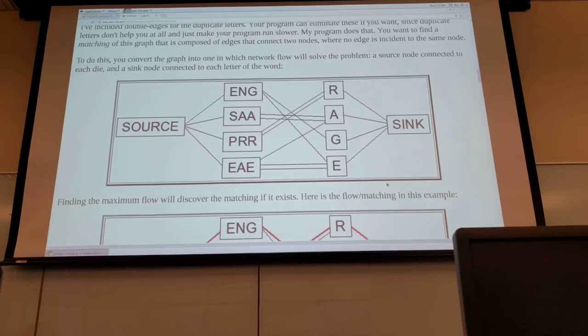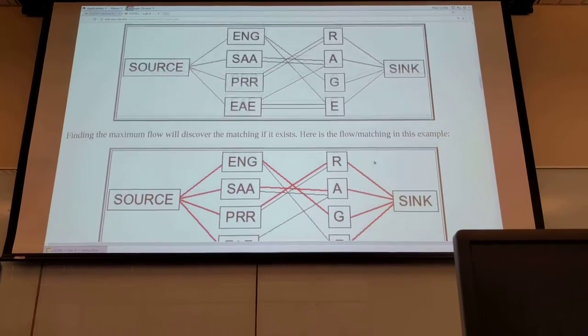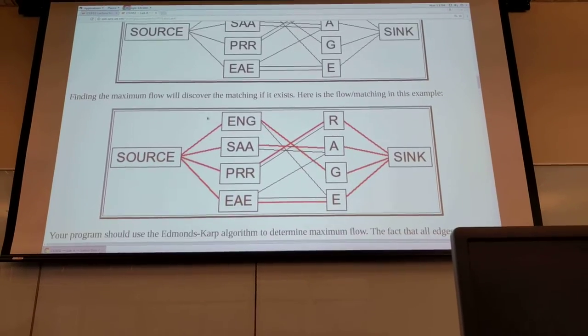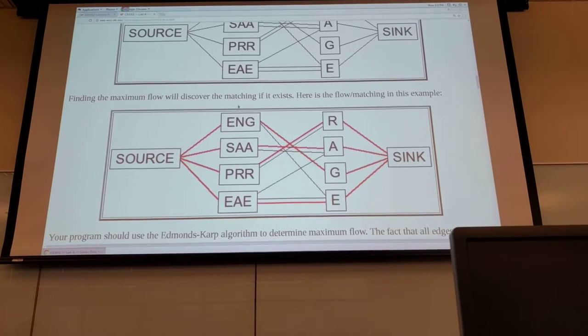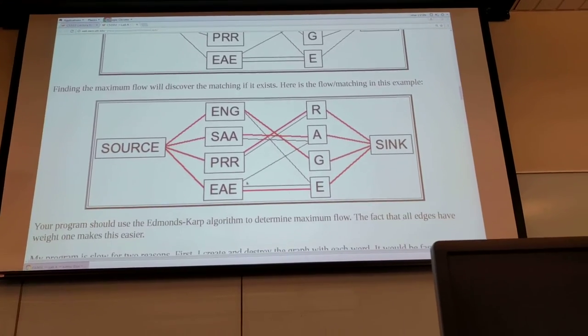And now to solve this problem you basically want to calculate the maximum flow. So if you find the maximum flow through the graph you discover the matching if it exists. So here's the flow matching for this example.